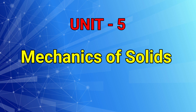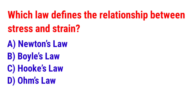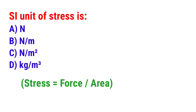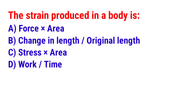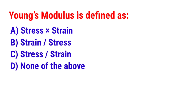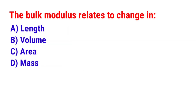Unit number 5: Mechanics of Solids. Next question: Which law defines the relationship between stress and strain? The answer is option C — Hooke's law. Next question: The SI unit of stress is? The answer is option C — Newton per meter square. Next question: The strain produced in a body is? The answer is option B — Change in length by original length. Next question: Young's modulus is defined as? The answer is option C — Stress by strain. Next question: The bulk modulus relates to change in? The answer is option B — Volume.